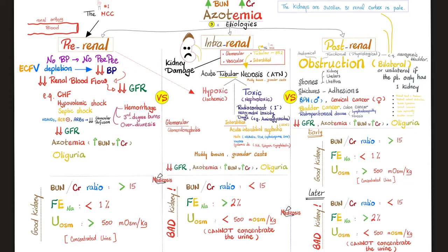Medications causing ATN include aminoglycosides and expired tetracyclines. Renal vessel disease occurs in diabetes and sickle cell disease. Interstitial disease is caused by NSAIDs, penicillin, cephalosporins, sulfonamides (sulfamethoxazole, sulfadiazine), viruses, or systemic diseases like lupus, Sjögren's syndrome, and cryoglobulinemia — all of which can lead to intrarenal azotemia.